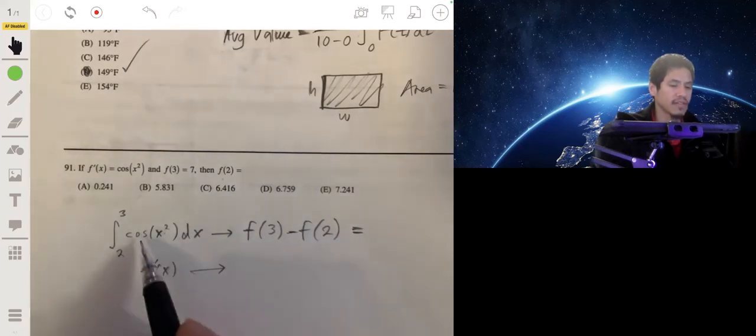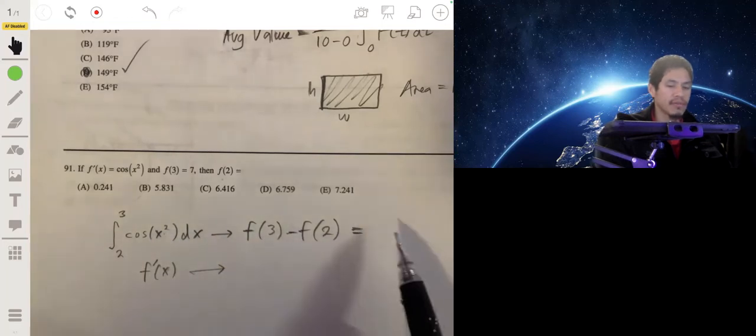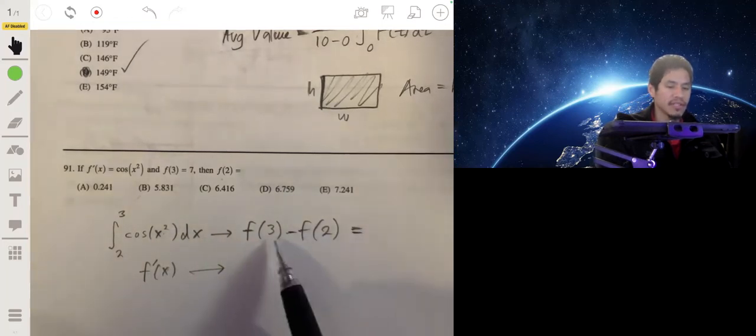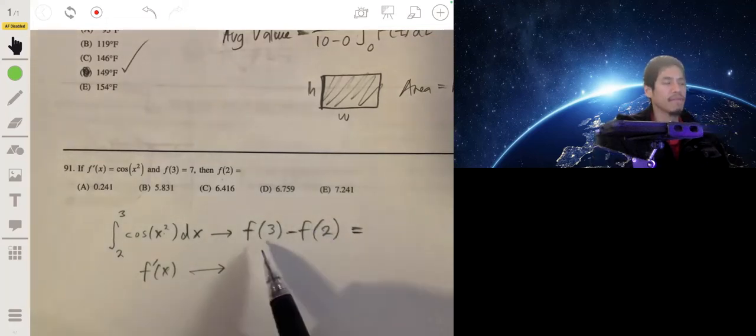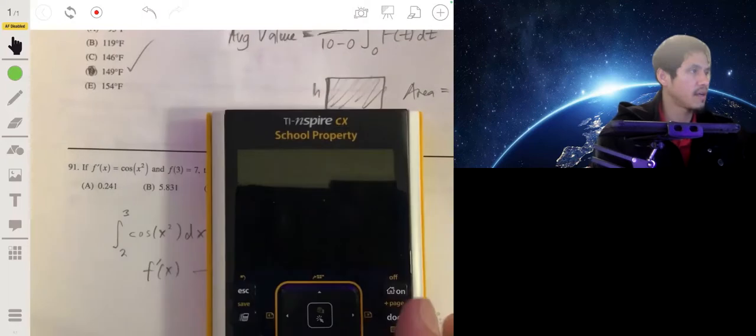We don't even need to know the exact function, but since we have our calculator, we just integrate this, we'll get some number, set it equal to this. We know that f(3) equals 7, so then we can solve for f(2) by taking away 7 divided by negative 1.